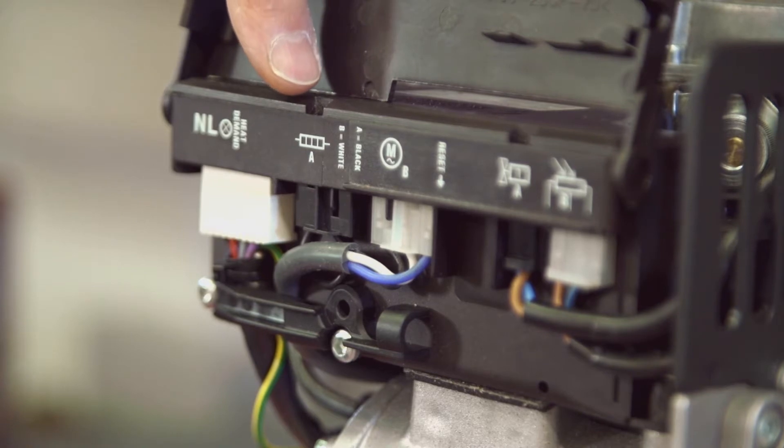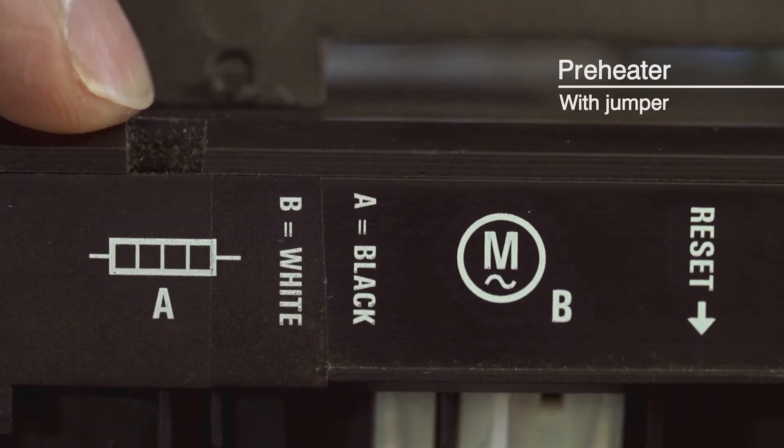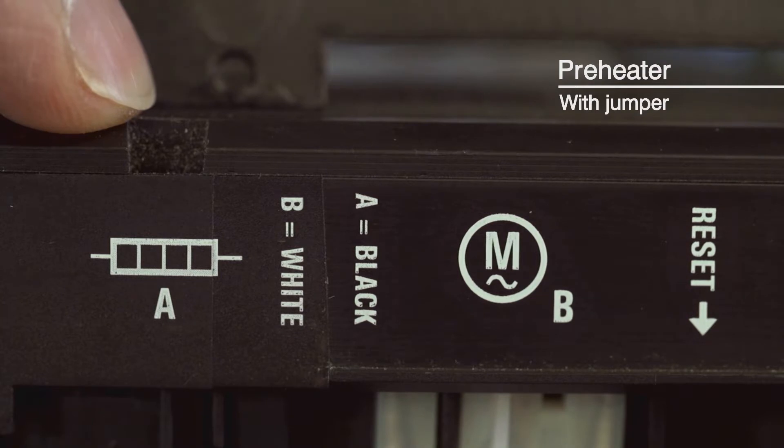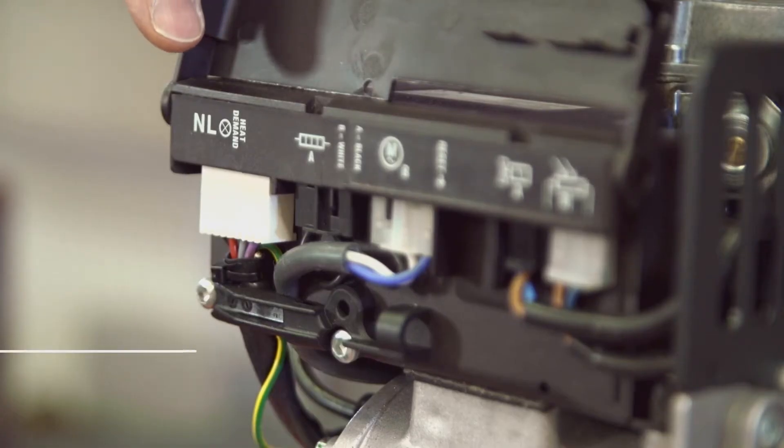This is the preheater connection fitted with a jumper as no preheater is fitted to this burner for the UK. And finally there's the mains connection.